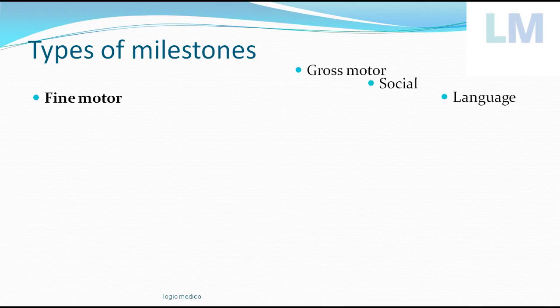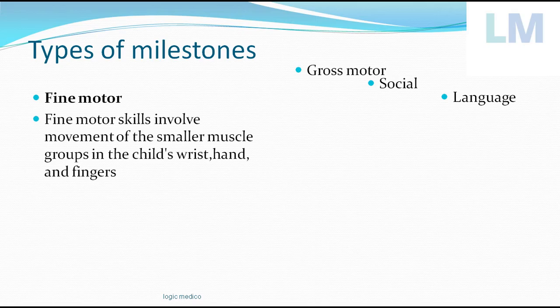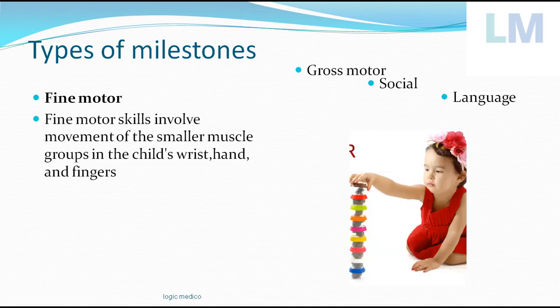Next is fine motor. Fine means very skillful, delicate movements. The child starts using small muscles of the body, especially in the periphery — in the wrist, hand, fingers, and even in the toes and feet. Fine motor skill involves movement of smaller muscle groups. For example, the child starts to build a cube or tower, then holds a pen or pencil using a pincer grasp. These are all fine motor skills — delicate movement of the terminal parts of the body using smaller muscles.